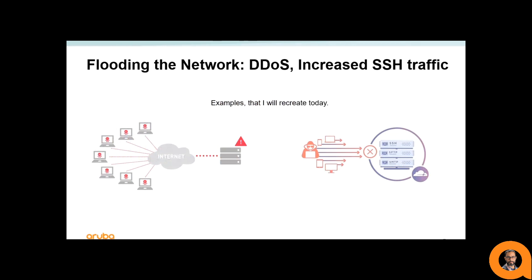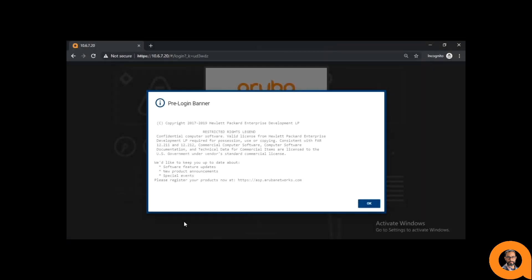Typically, this involves high rates of traffic, resulting in excessive CPU utilization. Today I'm going to use a traffic generator and show what happens in NAE when I crank up the traffic. Before we start monitoring the Control Plane Policing traffic, we have to install our COP3 script.